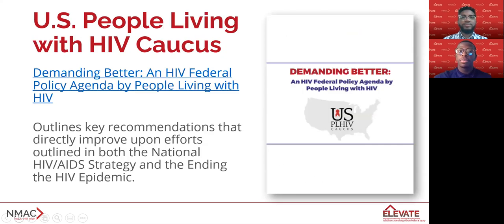An excellent example of the unique value people living with HIV bring to the table, even at the policy level, includes the development of the Demanding Better HIV Federal Policy Agenda, which was developed by member networks of the U.S. People Living with HIV Caucus, a network of networks. The authors outline key recommendations that directly improve upon efforts outlined in both the National HIV/AIDS Strategy and Ending the Epidemic. On a call where Harold Phillips, Director of the White House Office of National AIDS Policy, was present, there was a resounding message of the need for quality of life for people with HIV to be prioritized, for there to be a pillar focused solely on this along with related metrics. The Director responded that this was extremely helpful and noted that this request both aligns with and will inform the updates to come from the White House in December.